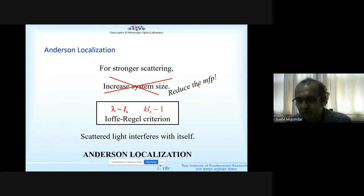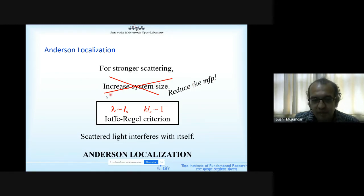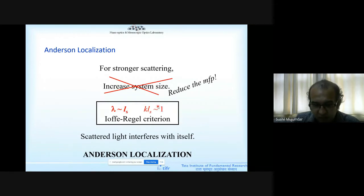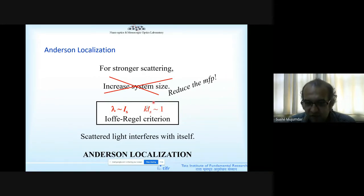When you reduce the mean free path, you may reach a regime where the wavelength becomes comparable to it. We started under the assumption that wavelength is much smaller than the mean free path, but now the wavelength is comparable. This can be written as k·l_s ≈ 1, where k is the wave vector. This is called the Ioffe-Regel criterion — a very famous criterion. If you hit this criterion, something strange happens in the physics of transport.